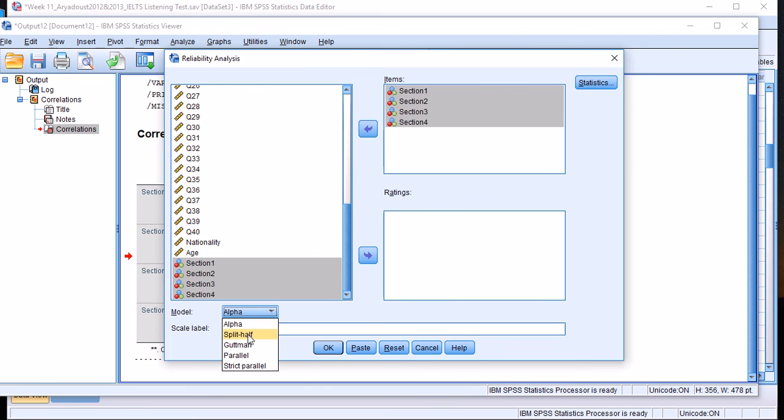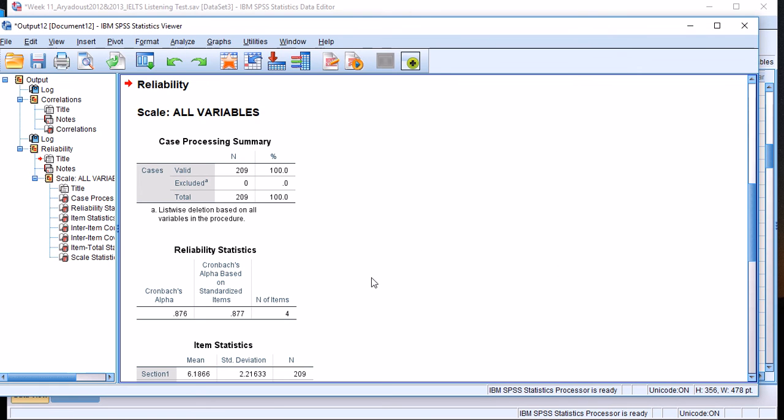This generates a very useful table for us. Before clicking OK, I wanted to show you that SPSS gives you a large number of options like alpha that we're going to estimate, but also split-half reliability analysis, Guttman, parallel, and strict parallel. But for this presentation, I think alpha is the best and most popular one. I clicked OK.